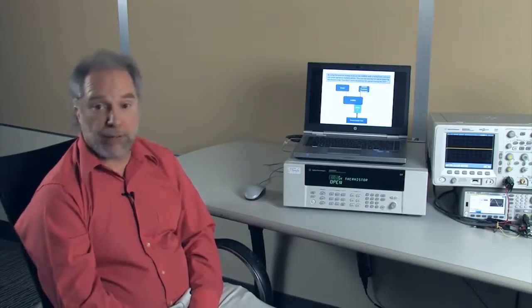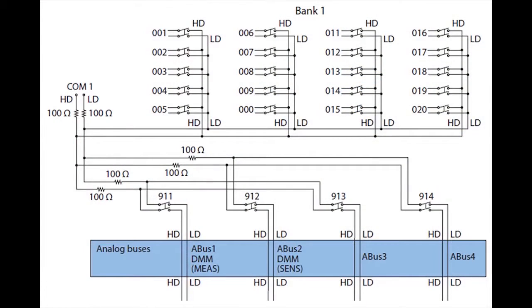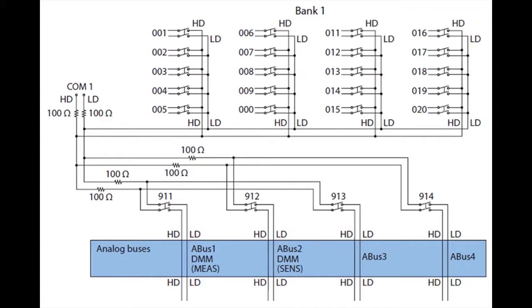One of the nice features about the 34980 is that you can add additional equipment by connecting signals to the rear of the box into the analog bus. We actually have four different analog buses that allow you to connect up to four different instruments.